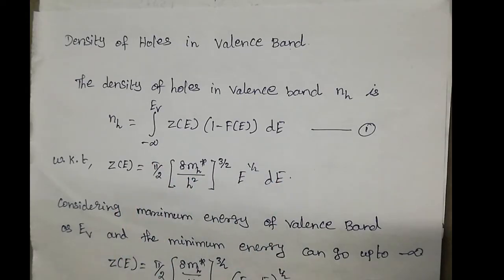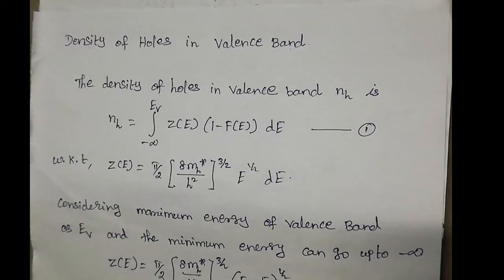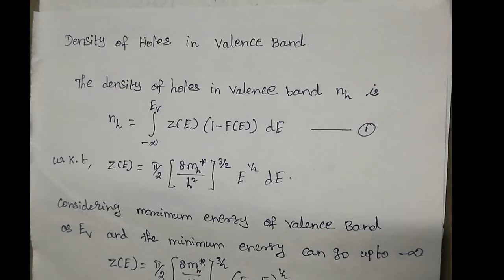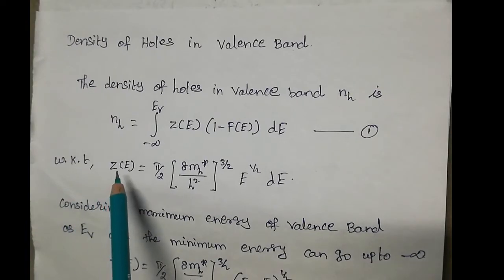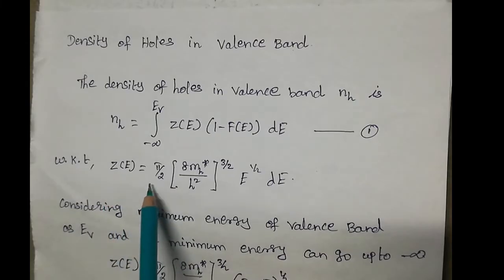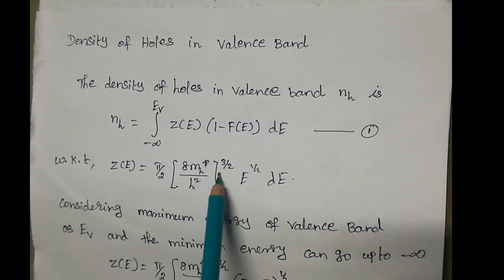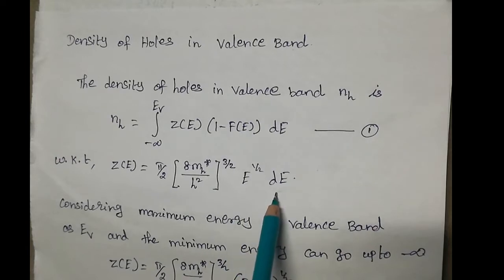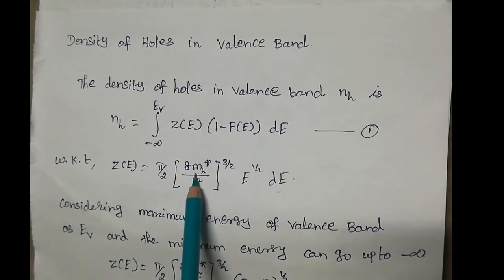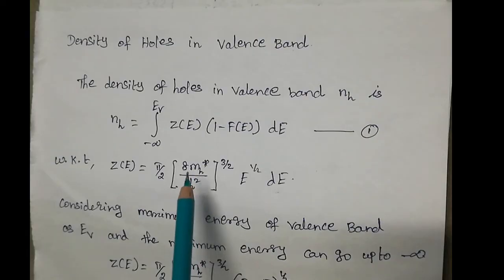The integration limit goes from minus infinity up to Ev for the valence band. For the conduction band, the minimum energy Ec goes up to plus infinity. We know that the density of energy states is given by: (π/2) × (8mh*/ℏ²)^(3/2) × (e)^(1/2), where mh* is the effective mass of the hole.